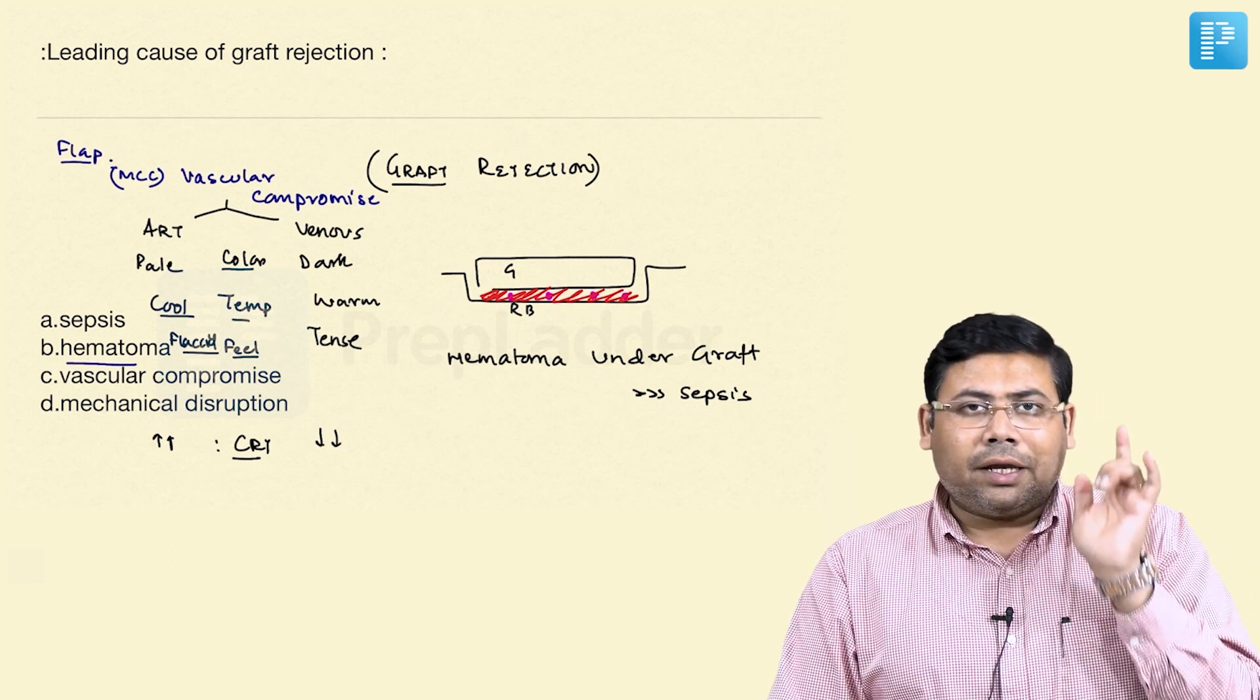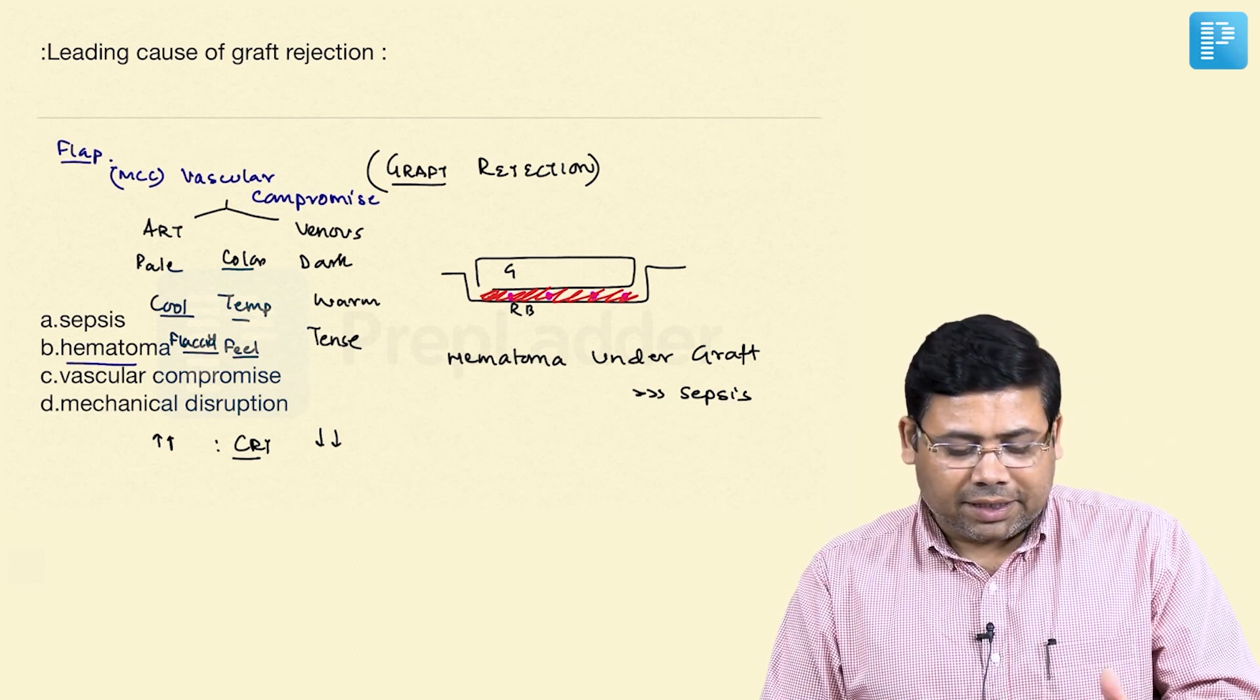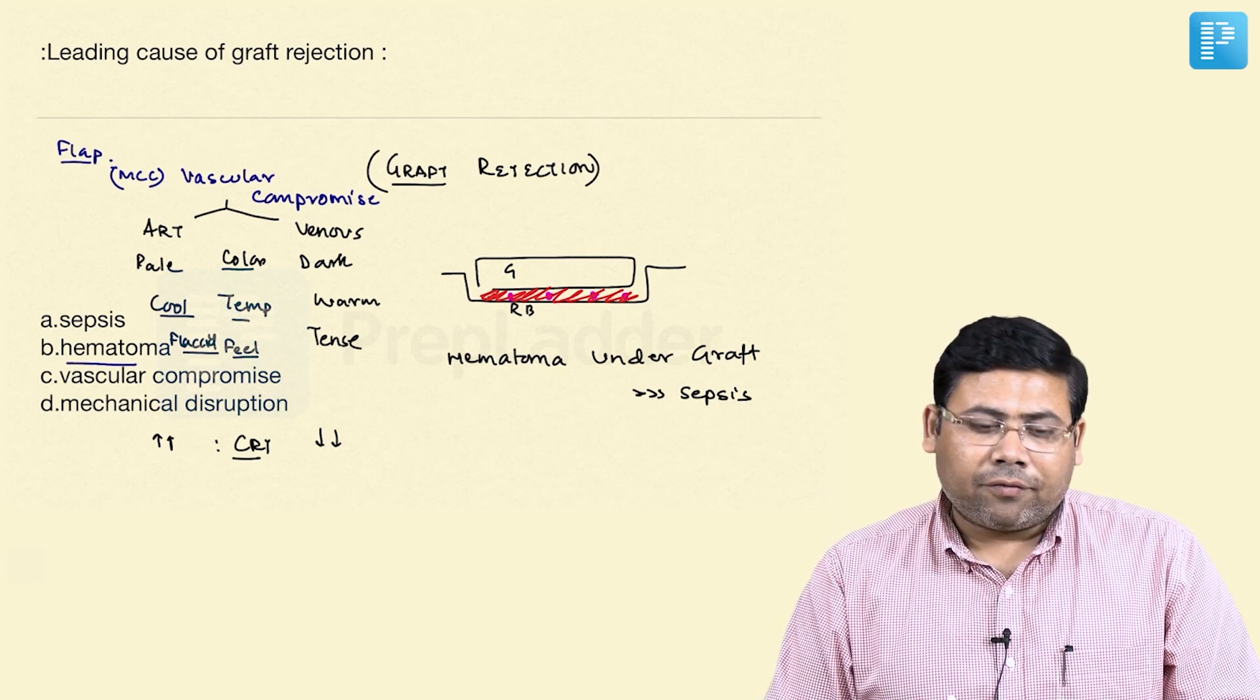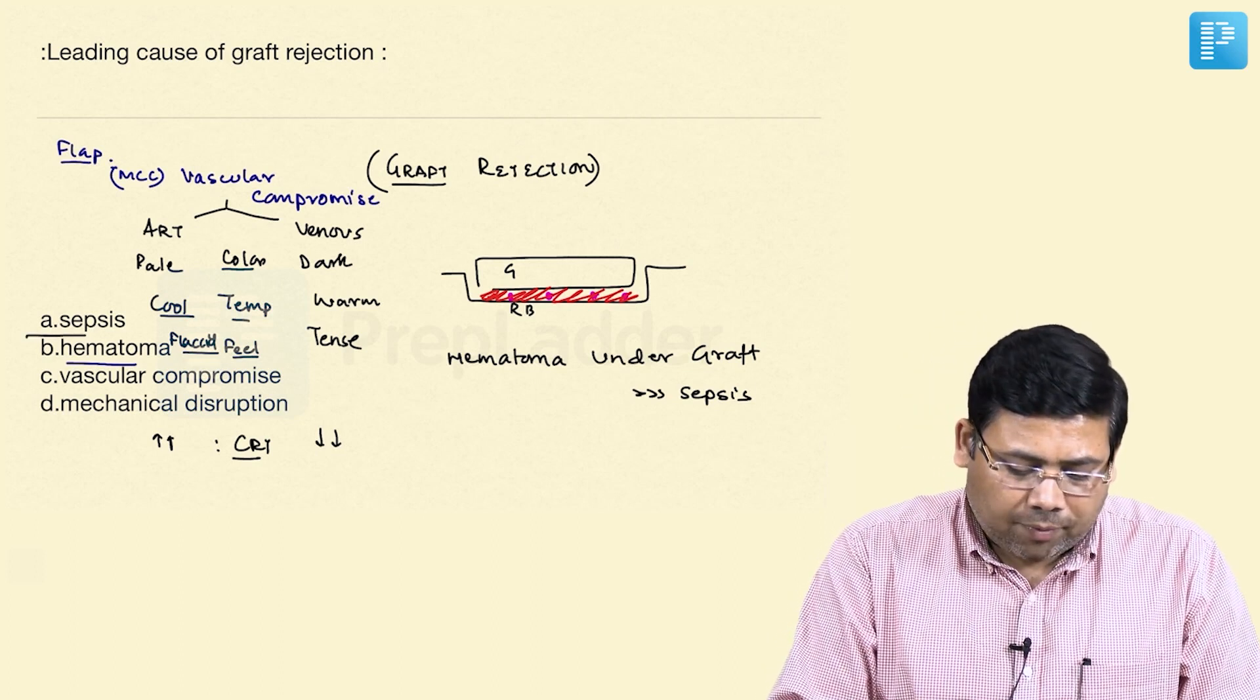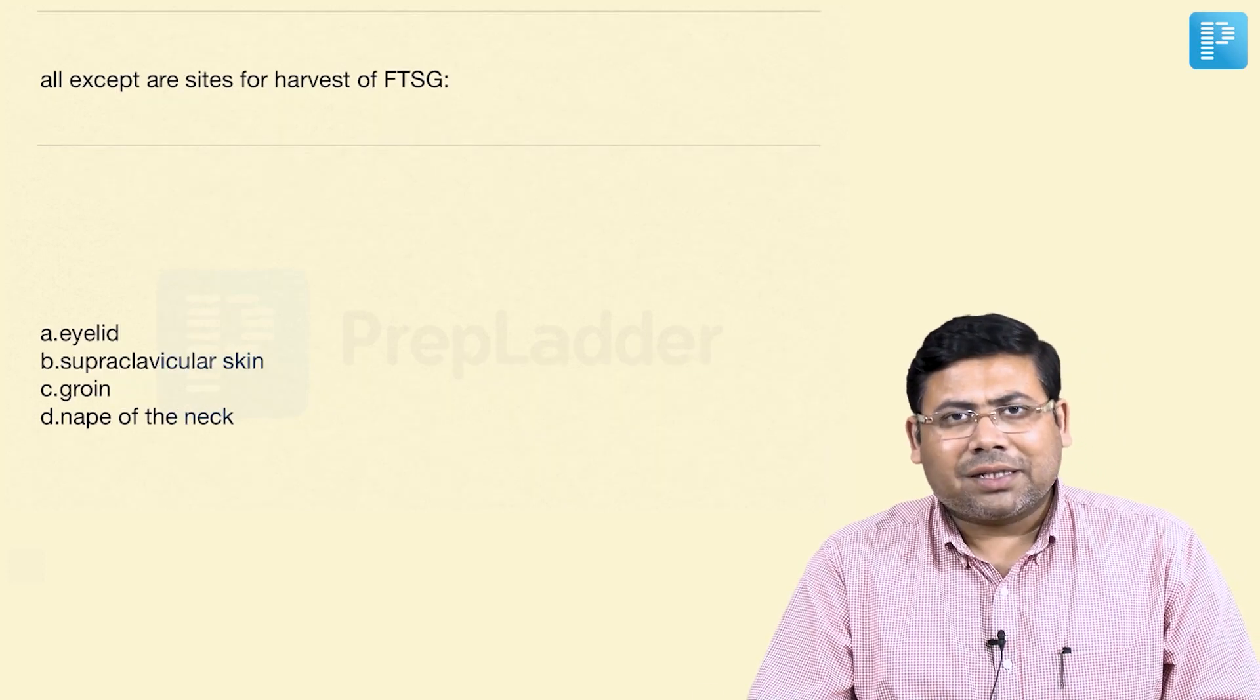The answer if it was a flap, then it would have been vascular compromise, otherwise it is hematoma under the graft. And this is the most common cause of graft rejection after sepsis.